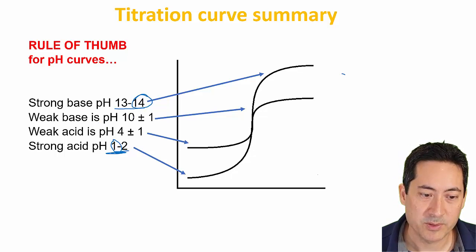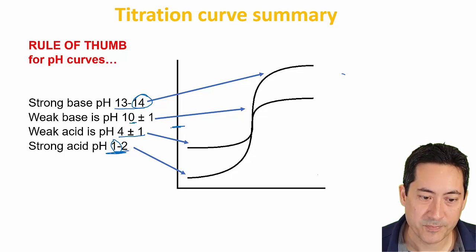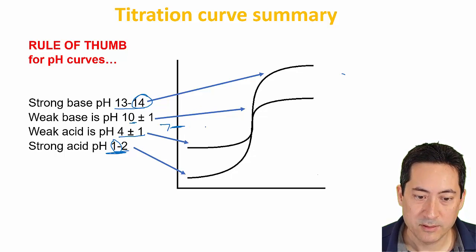Weak bases and acids are a little bit more difficult to define, so 9 to 11, 3 to 5 generally. When you're looking to determine whether you've got a titration curve that's a weak acid or base, you look at the pattern here.